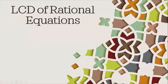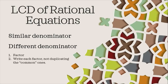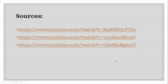For this session, let's have a recap. To find the LCD of rational equations with a similar denominator, just copy the denominator. If the denominators are different, follow two steps: first, factor each term; second, write each factor as part of the LCD but do not duplicate common terms. Thank you for watching. See you in our next video.